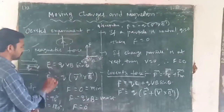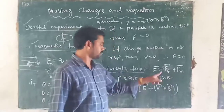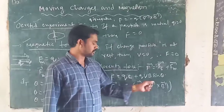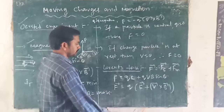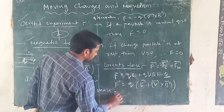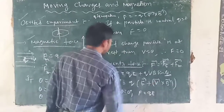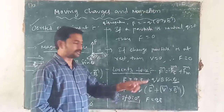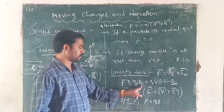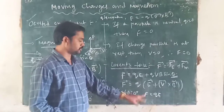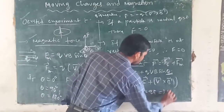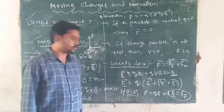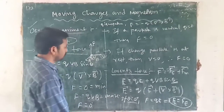So F_E is the electric force, F_E = QE. F_M is the magnetic force, F_M = QVB sin θ. In vector form, F⃗ = Q(E⃗ + V⃗ × B⃗). If θ = 0°, the Lorentz force equals only the electric force — there is no magnetic force.